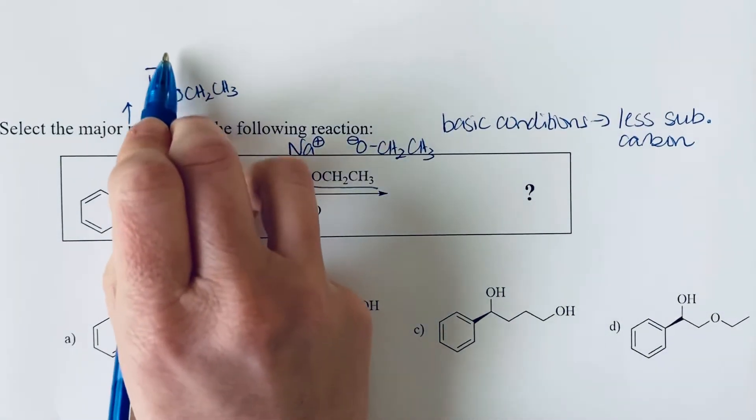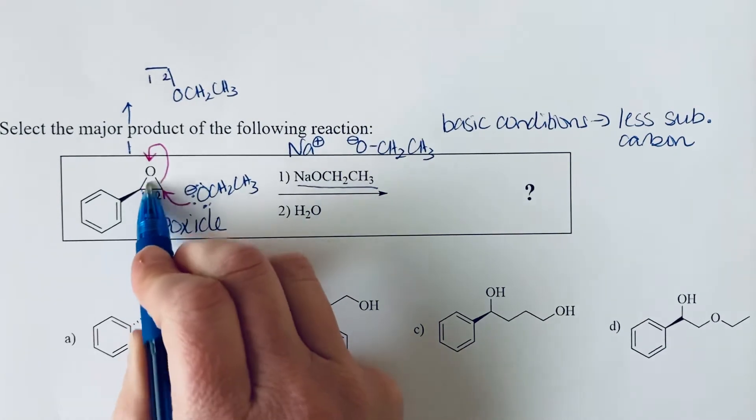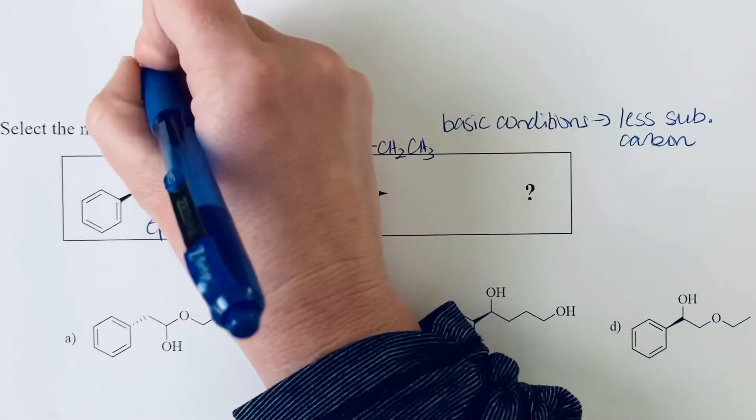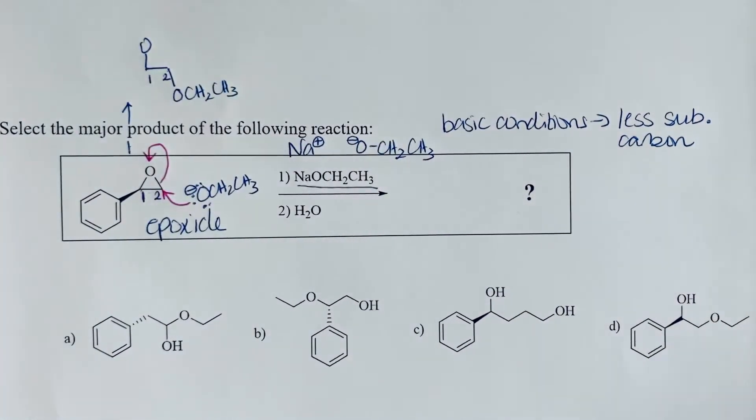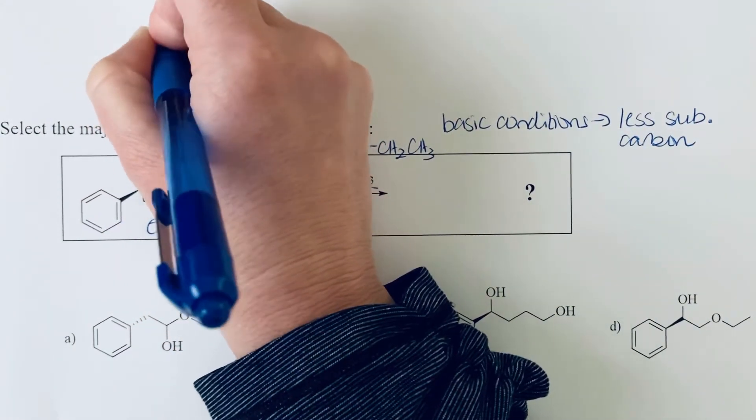Carbon two, we broke the bond to the oxygen, so there's not going to be a bond to oxygen there. But carbon one does still have a single bond to that oxygen, so we will place that in there. We put an extra lone pair of electrons on that oxygen, so it now has a negative charge.